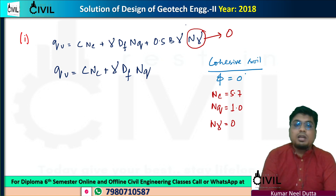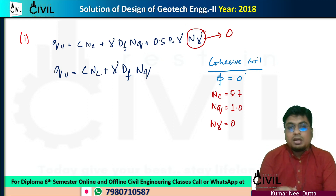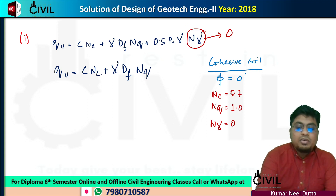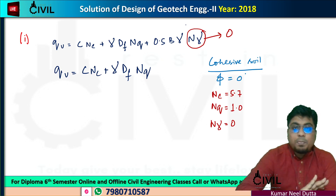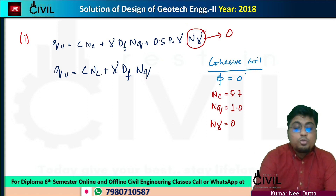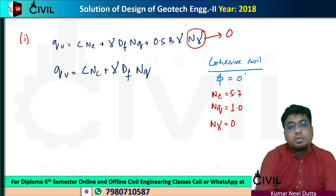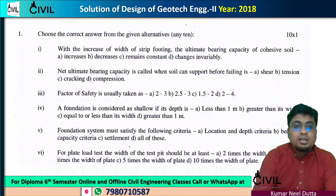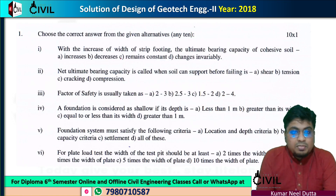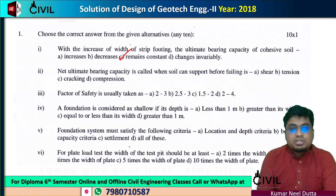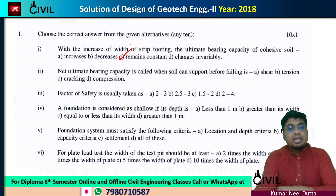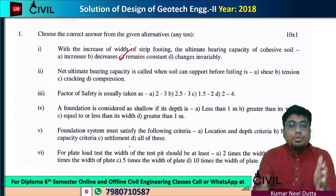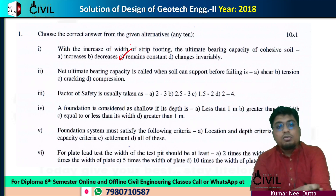So what will happen? With the increase in width of the footing — whether strip footing of width B or width 24 — we will have the same bearing capacity. It will remain constant. The ultimate bearing capacity remains constant with increasing footing width for cohesive soil.